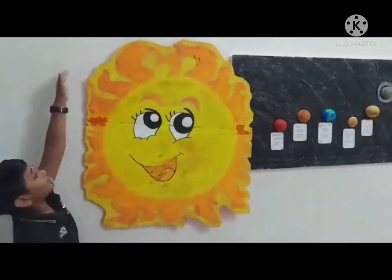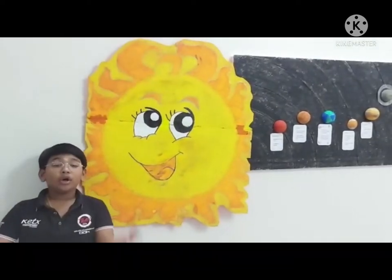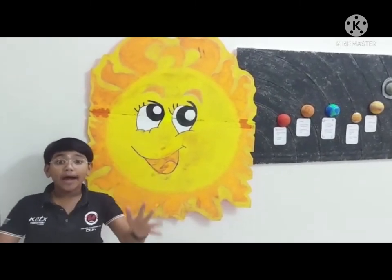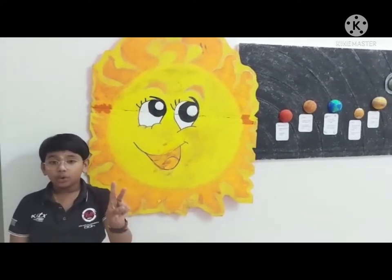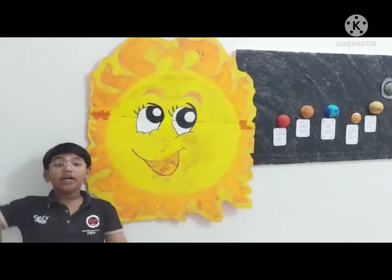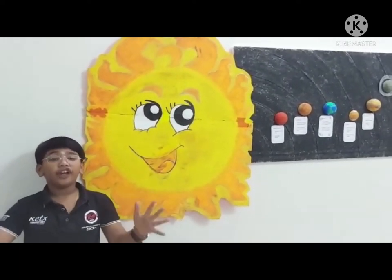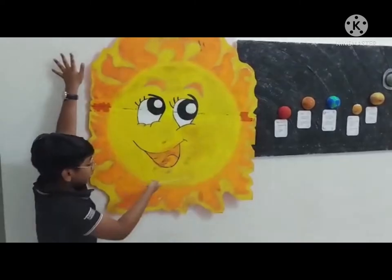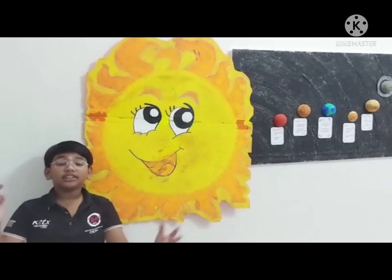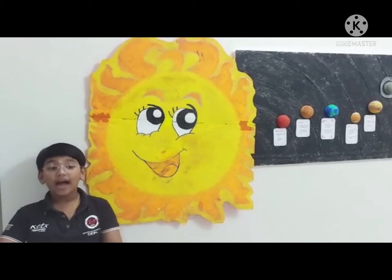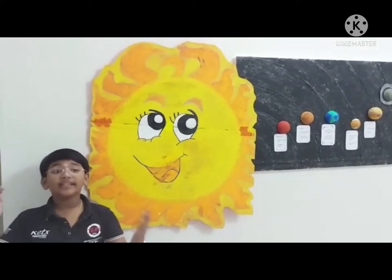This is the sun. The sun is 109 times wider than the earth. Number two, a million earths can fit inside the sun. Number three, the sun is a star. It gives us light and heat and is made of hot gas.